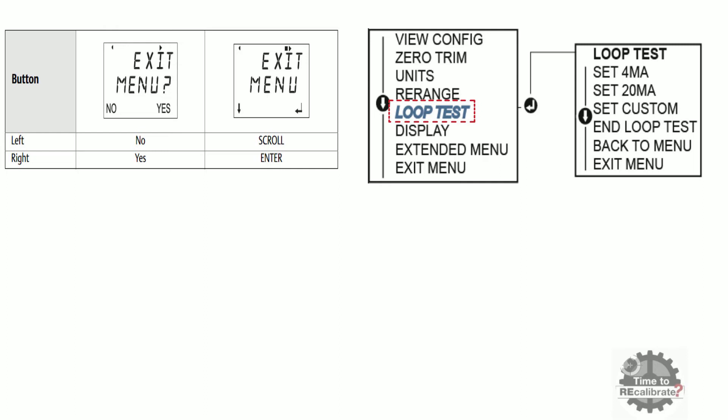In loop test menu, you can find various options such as set 4mA, set 20mA, set custom, and end loop test.